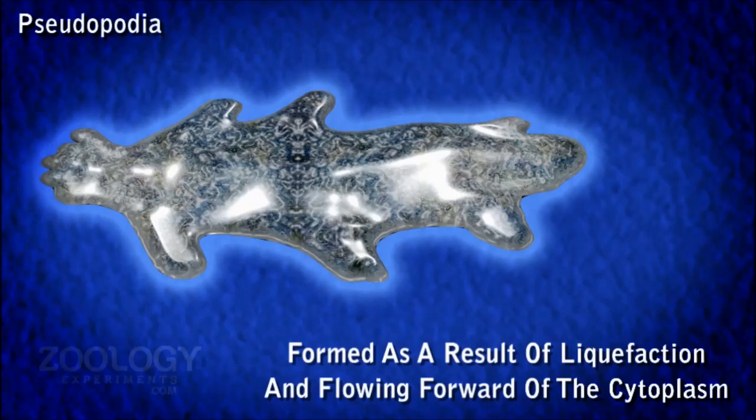As many pseudopodia are formed simultaneously, amoeba proteus is called a polypodial species. If pseudopodia are large and broad with rounded tips, such pseudopodia are called lobopodia.